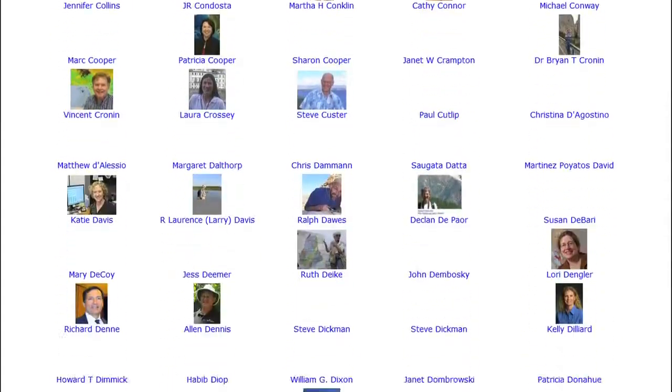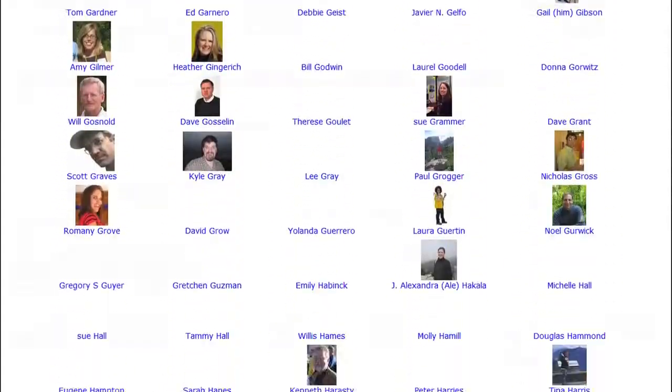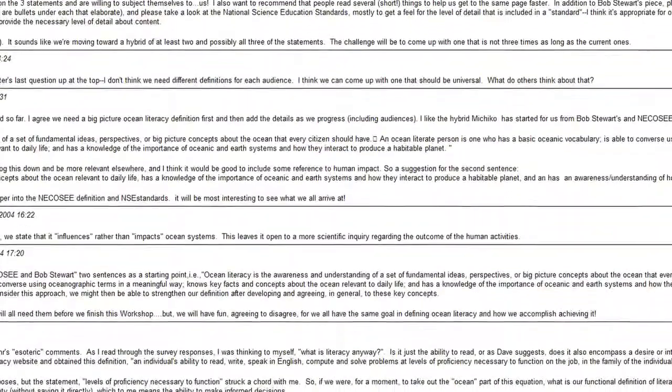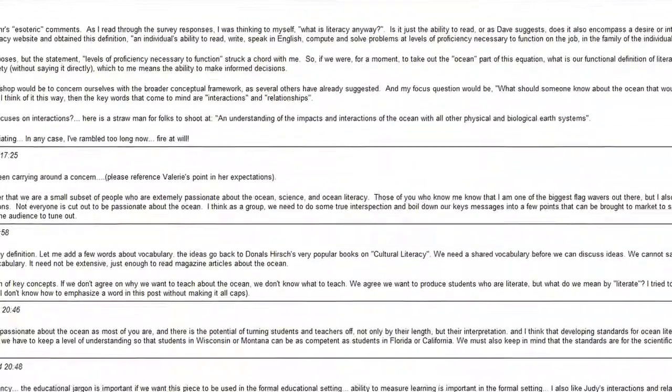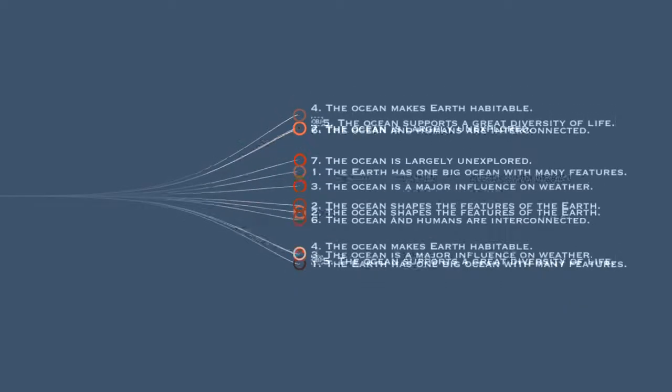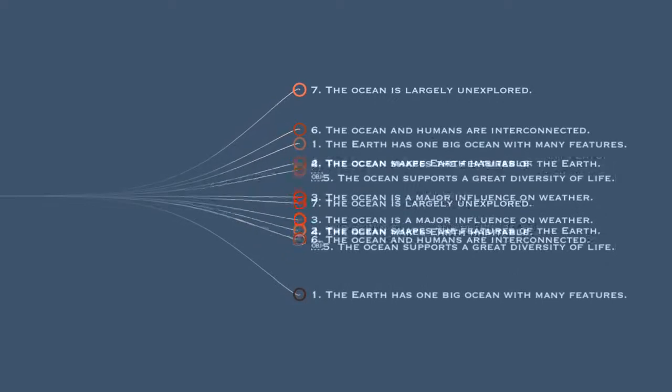In 2008, ocean educators, scientists and policy makers were concerned that very little ocean science was being taught in the United States K-12 schools. By participating in an online conference and several face-to-face meetings, a series of collective decisions were made that defined ocean literacy, determined seven fundamental principles and 44 supporting essential concepts.